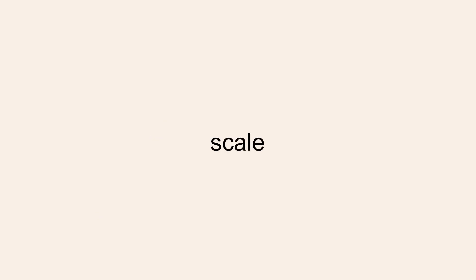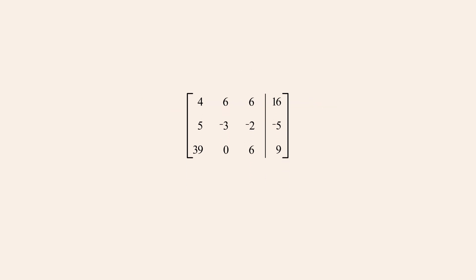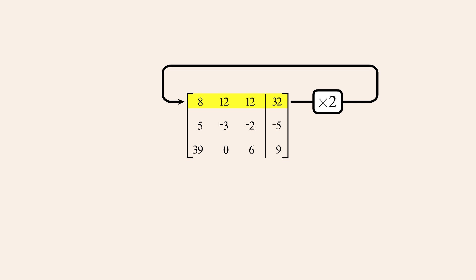The second type of elementary row operation is the scale operation. This operation allows us to multiply any row of the augmented matrix by a non-zero constant. For example, using the scale operation we could multiply all the elements in row 1 by the constant 2, and the result would then replace all the entries in row 1. To notate this, we write 2 R subscript 1 followed by an arrow and R subscript 1, indicating that 2 times row 1 replaces row 1.